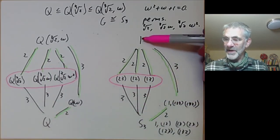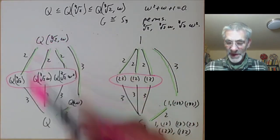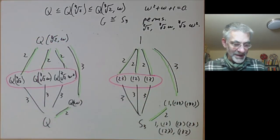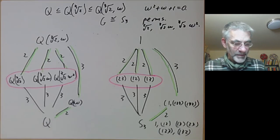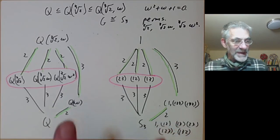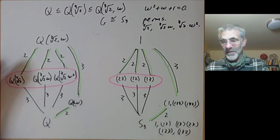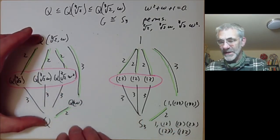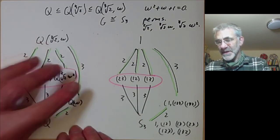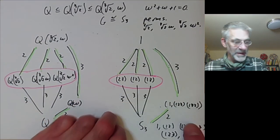The order-3 subgroup is normal in S3 and corresponds to a normal extension of Q. Normal subfields correspond exactly to normal subgroups. This is an example of the Galois correspondence: if you have a Galois extension, the lattice of subfields looks just like the lattice of subgroups, up to duality.